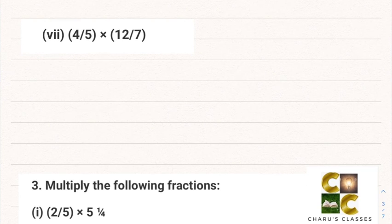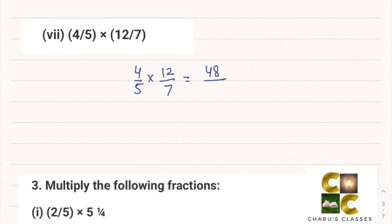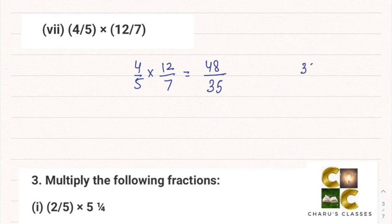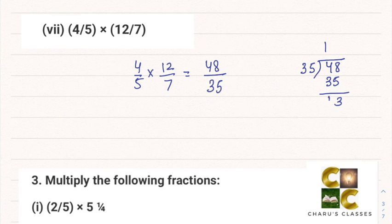Part 7: 4/5 multiplied by 12/7. 4 into 12 is 48 and 5 into 7 is 35. Since 48/35 is an improper fraction, we convert it to a mixed fraction by dividing: 35 ones are 35 and the remainder is 13, so 48/35 can be written as 1 and 13/35.